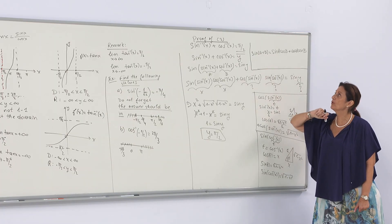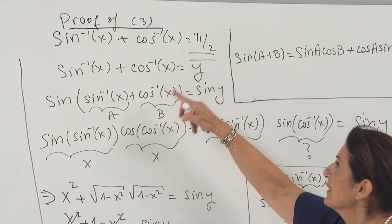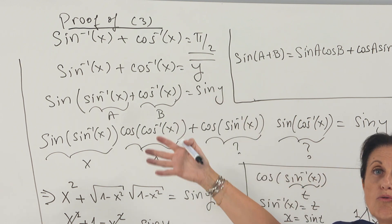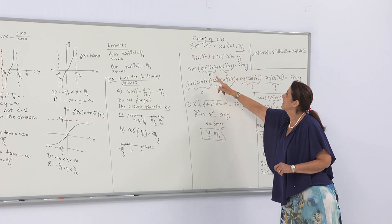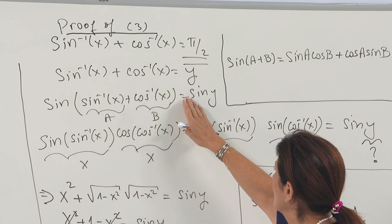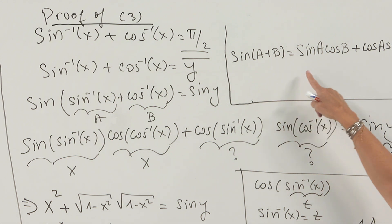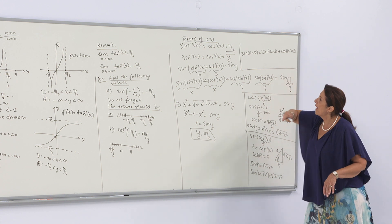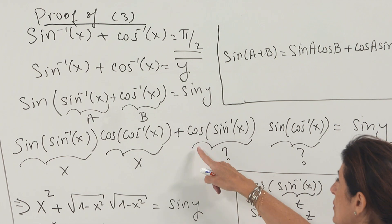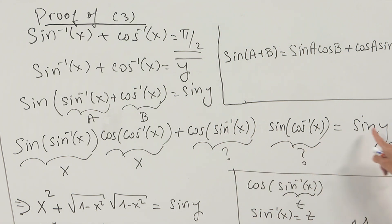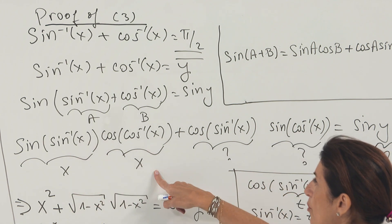I want to show you the proof of the third identity: inverse sine of x plus inverse cosine of x equals π/2. I define this expression as y and I am looking for the value of y — I need to show that y equals π/2. I take the sine of both sides: sine(inverse sine x plus inverse cosine x) equals sine y. I call the two parts a and b and recall that sine(a + b) equals sine a cosine b plus cosine a sine b. Applying this formula, I get: sine(arcsin x) times cosine(arccos x) plus cosine(arcsin x) times sine(arccos x) equals sine y. Since sine(arcsin x) equals x and cosine(arccos x) equals x, I have x squared, but I still need to find the other two expressions.